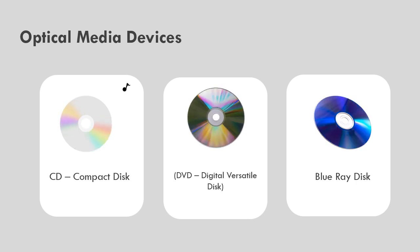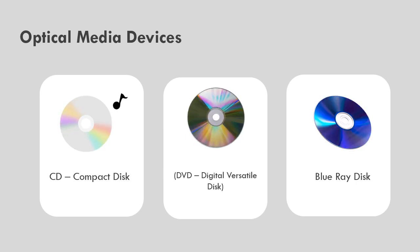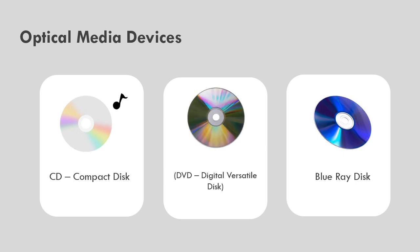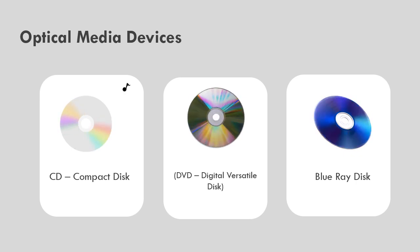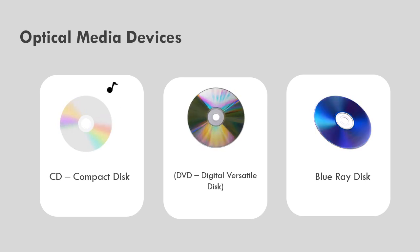Digital versatile disks — DVD. They are of two types: DVD-R, on which data can be written once, and DVD-RW, which is rewritable.